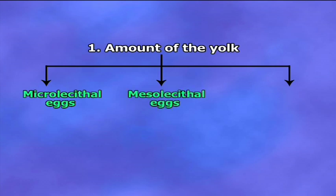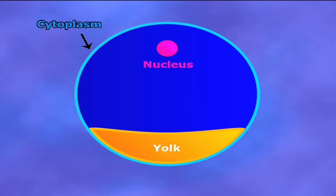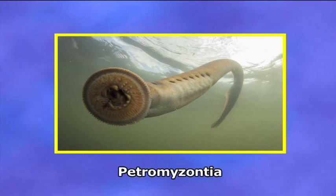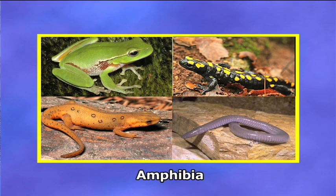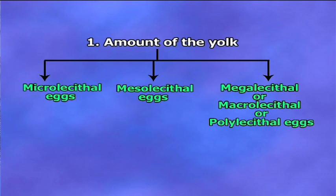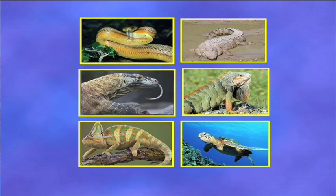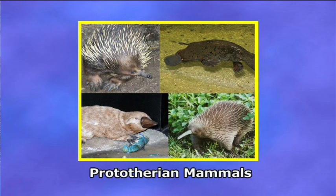Mesolacetal eggs: the eggs that acquire a moderate amount of yolk are known as mesolacetal eggs. Examples are petromyzontia, dipnoi, and amphibia. Megalacetal eggs, also called macrolacetal or polylacetal eggs: the eggs which contain a huge amount of yolk, that is food reserves, are known as polylacetal eggs. Examples are eggs of reptiles, birds, and prototherian mammals.